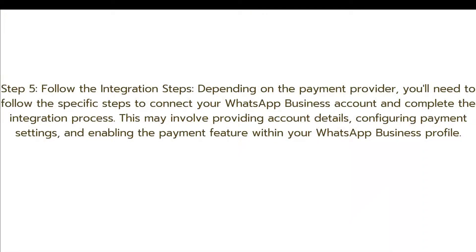The fifth and final step is to follow the integration steps. Depending on the Payment Provider, you will need to follow the specific steps to connect to your WhatsApp Business account and complete the integration process. This may involve providing account details, configuring payment settings, and enabling the Payment feature within your WhatsApp Business profile.